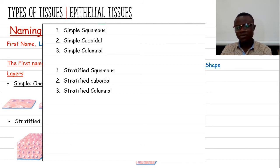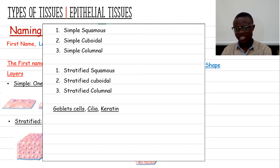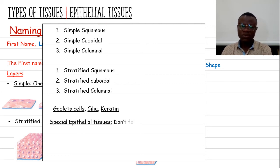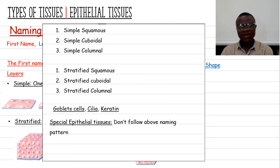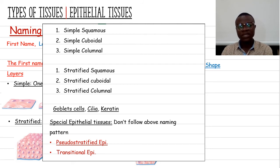The names of some tissues can also be modified based on the presence of different components — for example, goblet cells, cilia, or keratinization. You will see this especially when discussing stratified tissue. There are also special epithelial tissues that do not conform to the general naming pattern; these include the pseudostratified epithelium and the transitional epithelium, which have their own names.